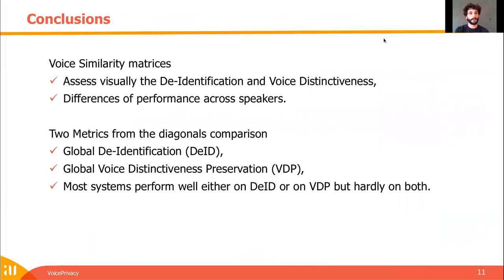To conclude, voice similarity matrices can be used in order to assess visually the de-identification and the voice distinctiveness preservation of a system. We have seen that there are differences of performance across speakers. Our two metrics can be used to assess the global de-identification and the global voice distinctiveness preservation of a system. Most systems perform well either on de-identification or on voice distinctiveness preservation, but hardly on both. Thank you very much for listening.